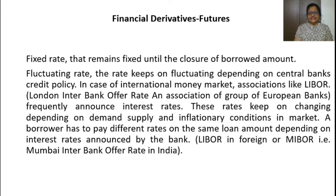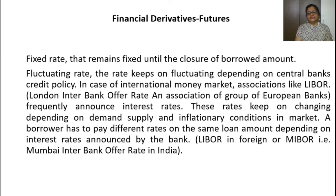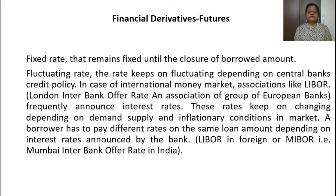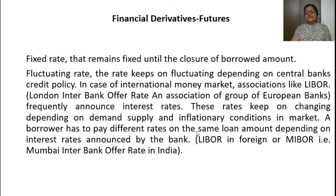Fixed rate remains fixed until the closure of the borrowed amount — it will not change. For example, if you have taken a loan at 8% for 10 years, you just go on paying 8% for 10 years. Fluctuating rate keeps on changing depending on central bank credit policy. In the international money market, associations like LIBOR — London Interbank Offer Rate — set these rates.